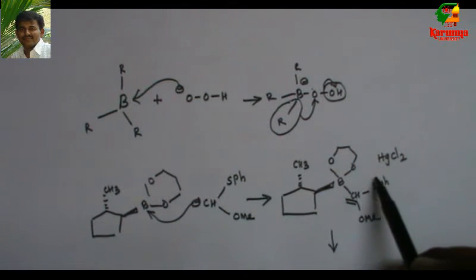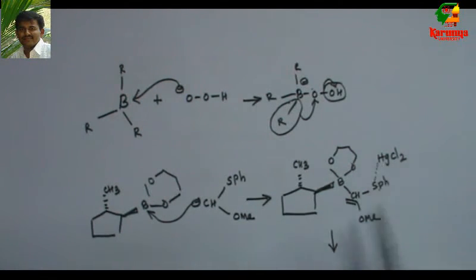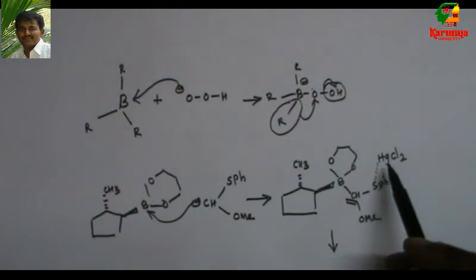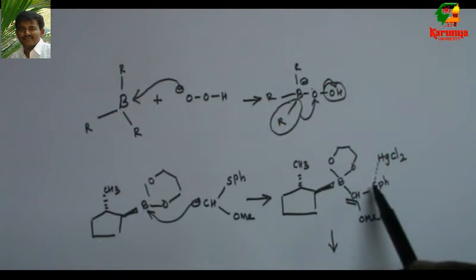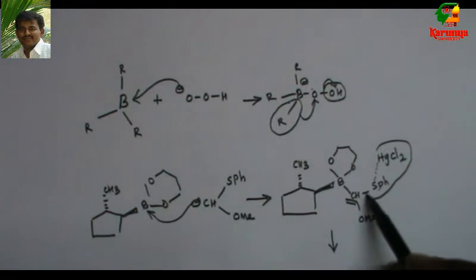So once the mercury is bound to sulfur, then the whole thing acts as leaving group. In this case it is OH minus. Here the whole moiety acts as leaving group.